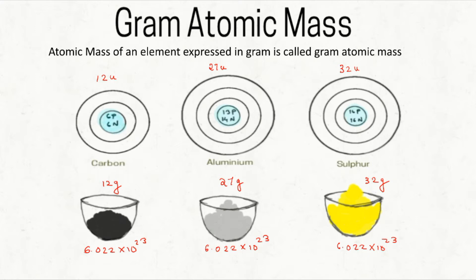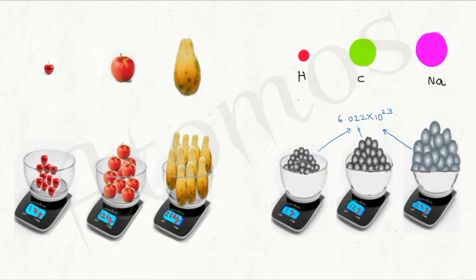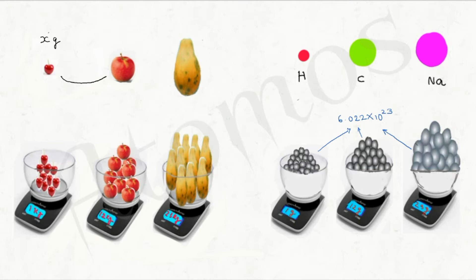A question remains: when we take 12 grams of carbon, 27 grams of aluminum, and 32 grams of sulfur, how do all these elements contain the same number of atoms? To understand the logic, consider this example: we have a cherry fruit, an apple, and a papaya. We take the weight of one cherry as x grams. One apple is 12 times heavier than a cherry, so it is 12x grams. The papaya is 23 times heavier than a cherry, so it is 23x grams.